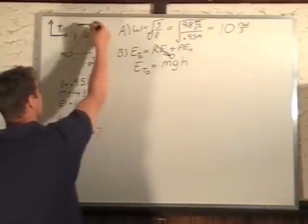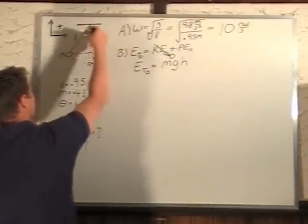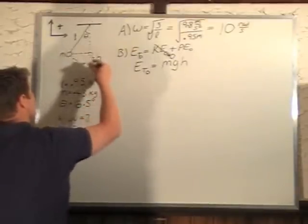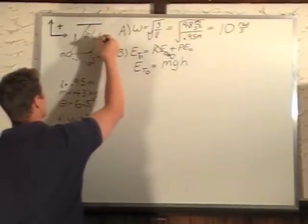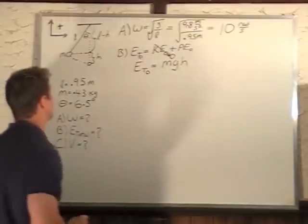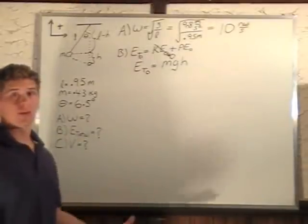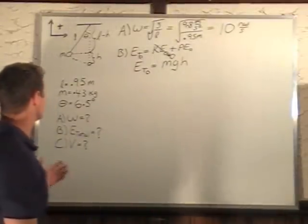If we call this point our zero point where the pendulum ball reaches down to its lowest point, then this is our height here. This pendulum length is still the same, so this whole distance here is l, and this distance here is l minus h.